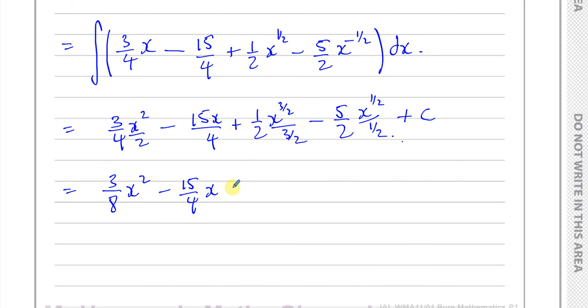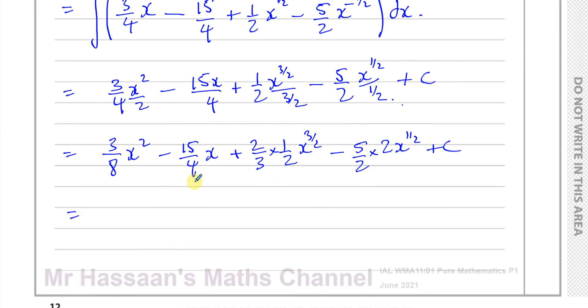So now this is going to give us 3 over 8x squared minus 15 over 4x plus 2 thirds times a half—because when you're dividing by a fraction, you're multiplying by its reciprocal—that will be x to the power of 3 over 2, and minus 5 over 2 times, when you divide by half it's like multiplying by 2, that's x to the power of a half plus c. And finally, in simplest form: 3 over 8x squared minus 15 over 4x plus 1 third x to the power of 3 over 2 minus 5x to the power of a half plus c. And there's the final answer.